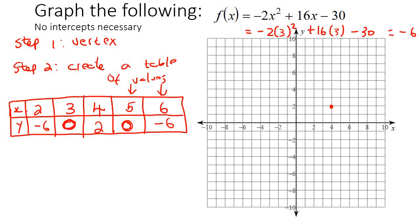Now all we do is just go plot those values. So 2 and negative 6 is there. 3 and 0 is there. 4 and 2 — we've already got that. 5 and 0, and then 6 and negative 6. Now we're just going to try to draw a neat curve going through there, put a little arrow, and that is it. That is all we are going to be doing to draw a quadratic. In later lessons, I'll teach you exactly how to find the x-intercepts and y-intercepts, but that will come later. For now, we're just learning how to draw them like this.